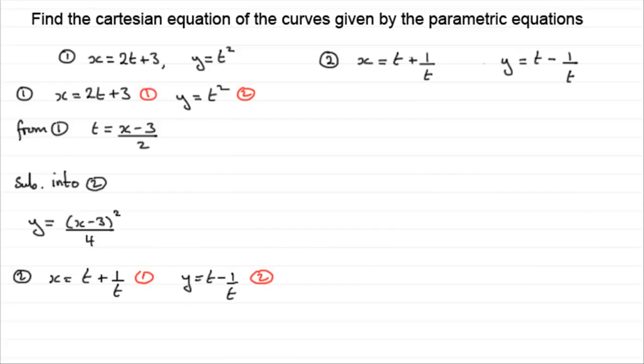So, the way round this is to notice that we can eliminate, say, this term here, the plus 1 over t term with this term here, just by simply adding the two equations together. So, if we do add them together, let's just say we do 1 plus 2. What does that give us? Well, we'll have x plus y equals, and then we've got this t plus this t, so that's going to be 2t, and we're adding them because 1 over t added to minus 1 over t just cancels it out.